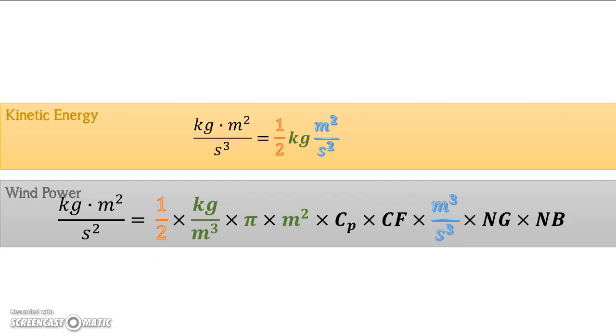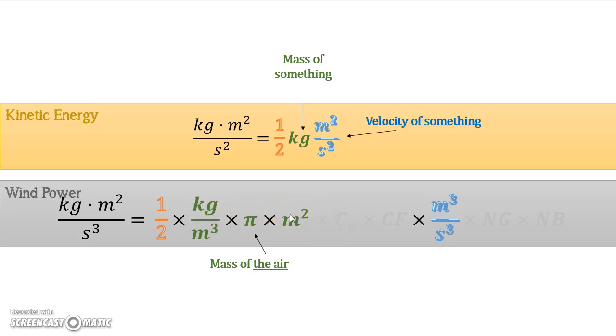So we're going to look at these equations again really quick, do some canceling, make sure the units work out, and then we'll be done. So we'll get the efficiency numbers out of the way because they're not really involved in this part. So you have your mass of something. In the case of wind power, it's the mass of the air. Then you've got your velocity of something, which in this case is going to be the velocity of the air.